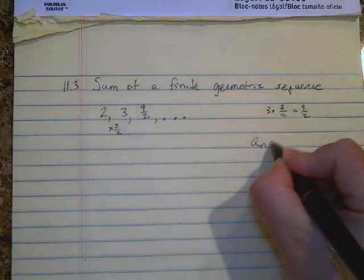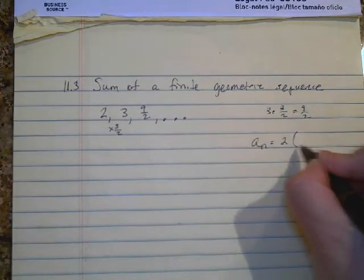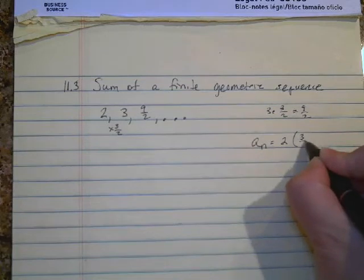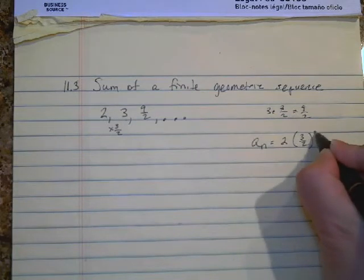So the rule would be the first term times the ratio, which is three halves, to the n minus one power. That's our rule.